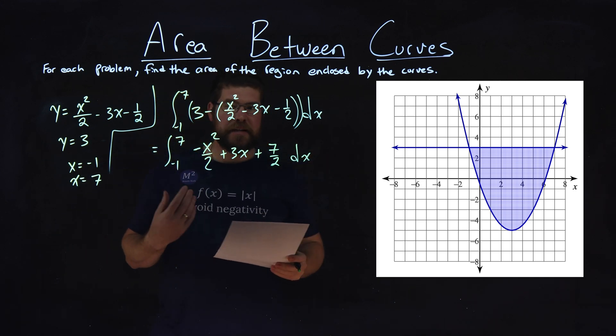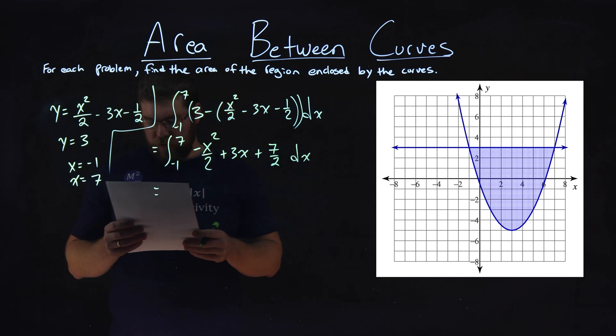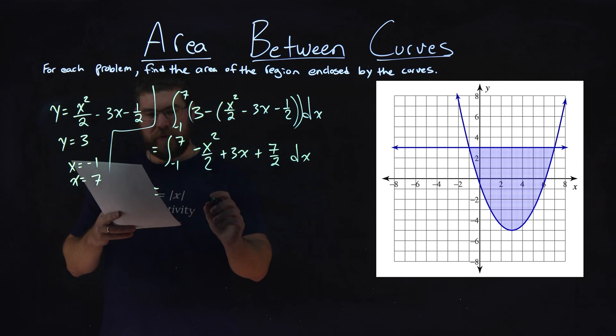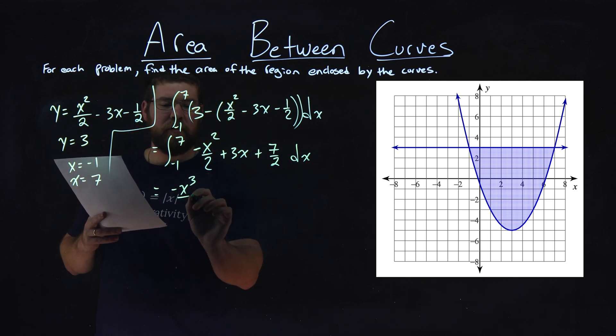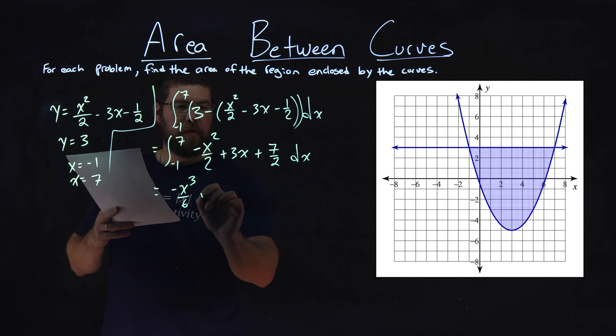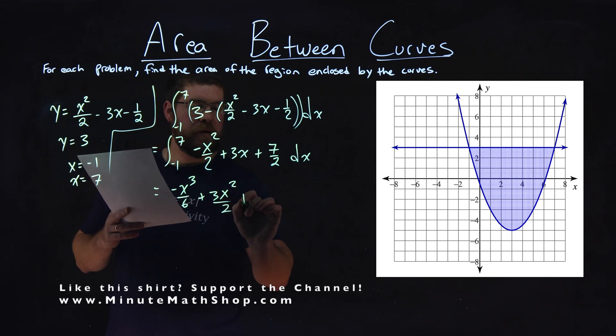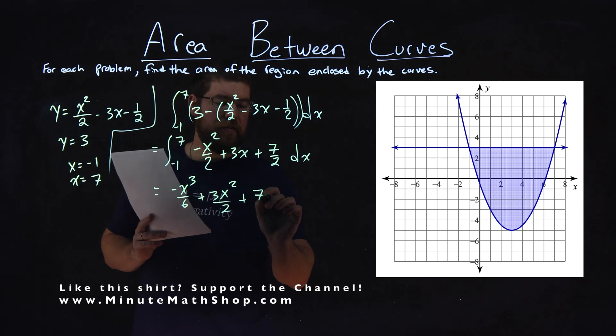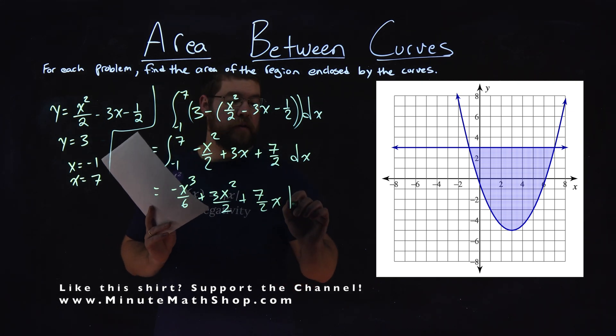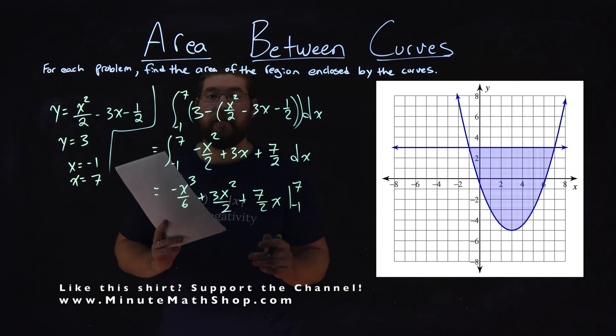Now from here, we can find the integral. The integral of negative x squared over 2 is negative x to the third over 6, plus the integral of 3x is 3x squared over 2, and the integral of 7 halves is just 7 halves x. And we're integrating this from negative 1 to 7.